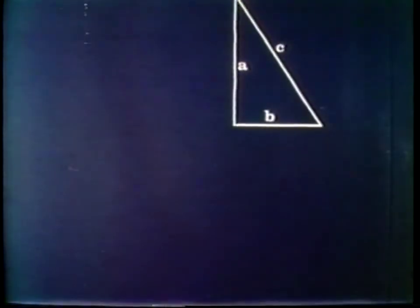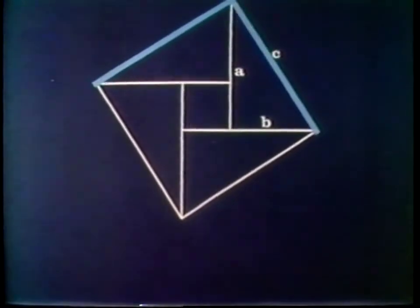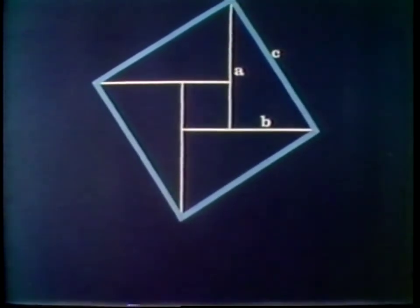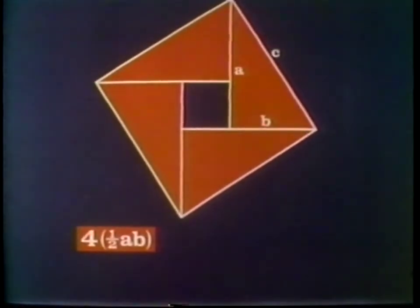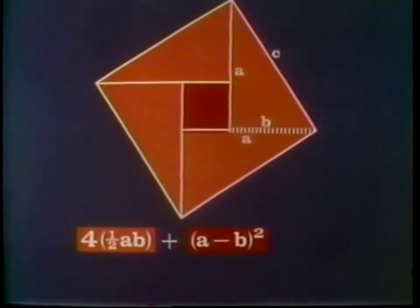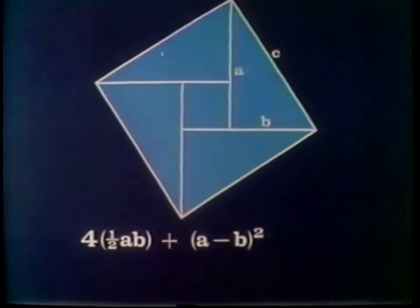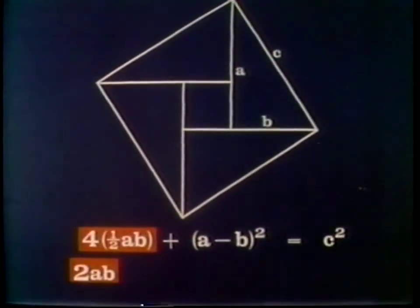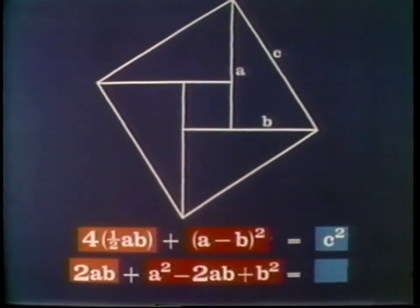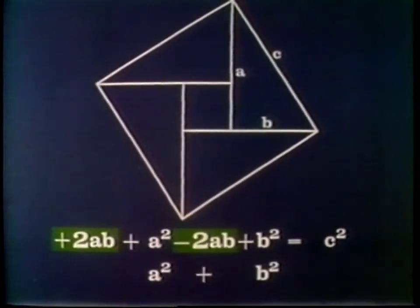Another mathematician proving the same theorem set his four congruent right triangles so that the hypotenuse of each triangle is the side of the larger square. The area of the large square is equal to four times the area of each triangle — four times one-half AB — plus the area of the small square, which is A minus B squared. And the area of the large square is also equal to the square of each side, or C squared. The equation is simplified, and again A squared plus B squared equals C squared.